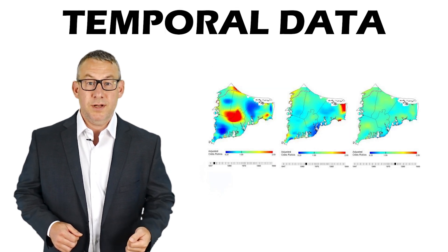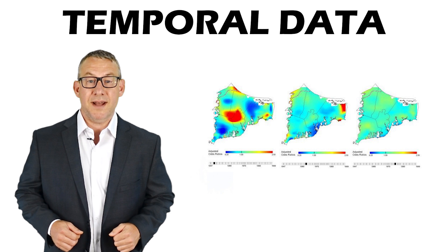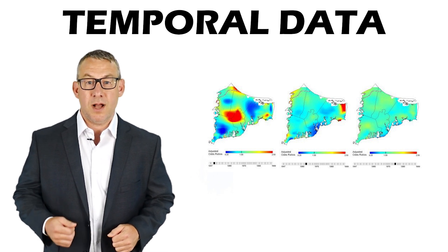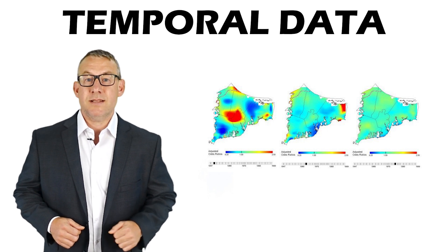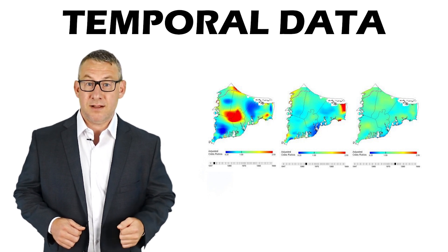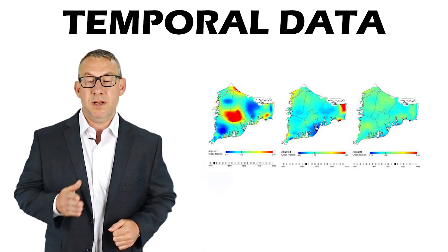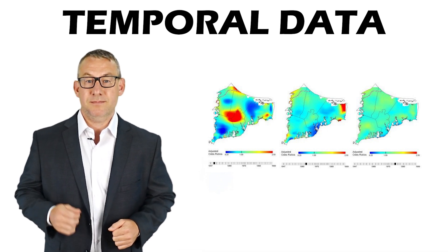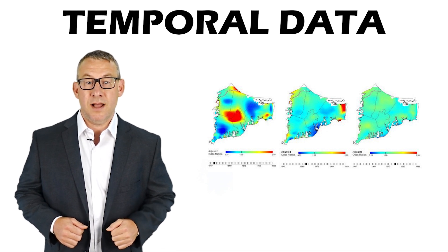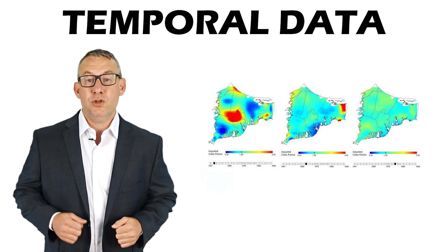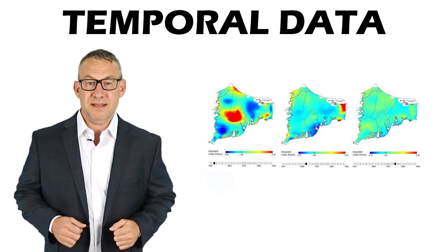That's all that I've included in this section about temporal data. Temporal data is a simple concept to grasp. In short, temporal data consists of data containing multiple measurements of time, taken at different periods in time. Temporal analysis involves analyzing the dimension of time along with two or three dimensions of space.